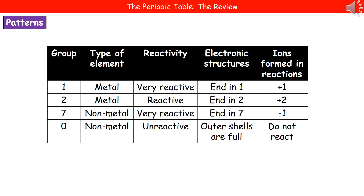Jumping across to the right-hand side of the Periodic Table, we find group 7. These are non-metals and they're very reactive. Their electronic structure ends in 7, and the ion they form is minus 1, because they gain one electron. Finally, group 0 elements are also non-metals, but they're very unreactive — they don't really react with anything. The reason for that is that their outer shells are full, so they won't form any ions.